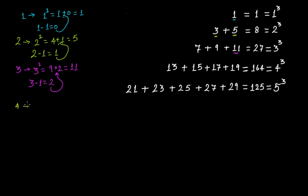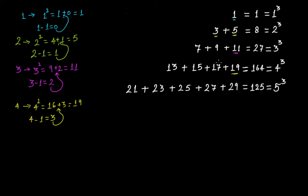For four cubed: four squared is 16. Four minus one is three. Add three to 16 — you get 19. So 19 is the largest odd number here. We need four consecutive odd numbers: before 19 is 17, before that 15, and before that 13.